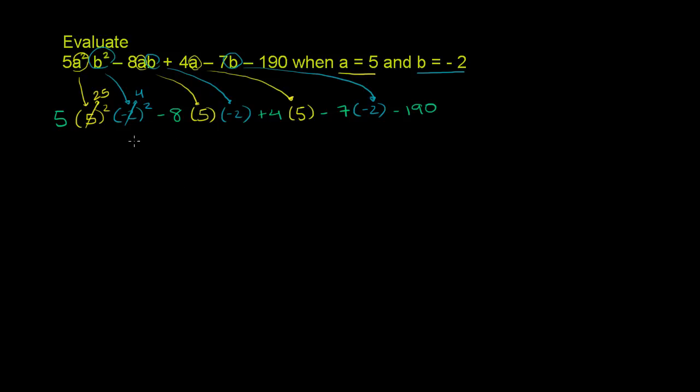Then you don't have to do any more exponents here, so let's just multiply everything. So we're going to have 5 times 25 times 4. 25 times 4 is 100, so it's going to be 5 times 100. So this over here is going to simplify to 500.